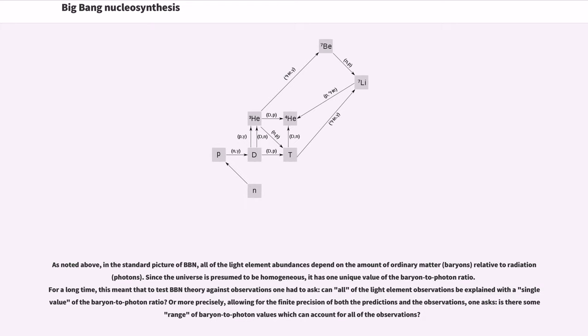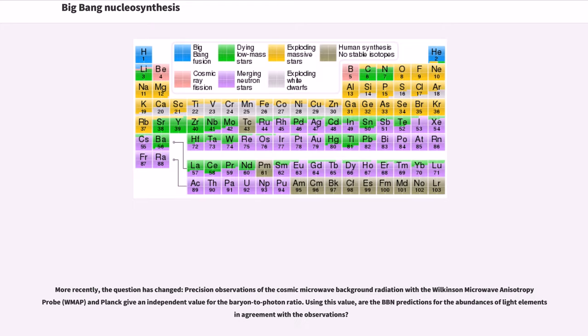As noted above, in the standard picture of BBN, all of the light element abundances depend on the amount of ordinary matter relative to radiation. Since the universe is presumed to be homogeneous, there is one unique value of the baryon-to-photon ratio. For a long time, this meant that to test BBN theory against observations one had to ask: can all of the light element observations be explained with a single value of the baryon-to-photon ratio? Or more precisely, allowing for the finite precision of both the predictions and the observations, one asks: is there some range of baryon-to-photon values which can account for all of the observations?